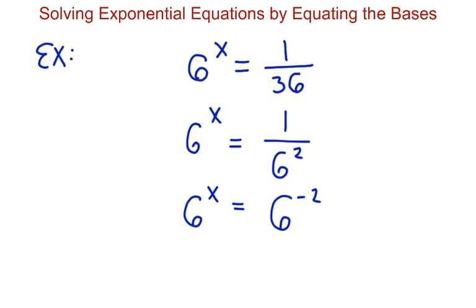At this point, our bases are matching, and we can just draw a conclusion from here that x is equal to negative 2. And then that one would be completed there. So again, this one just involves rewriting one side of the equation.